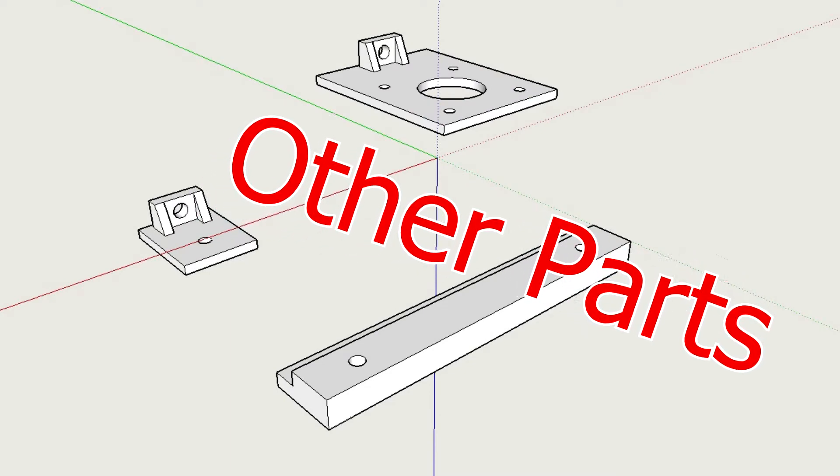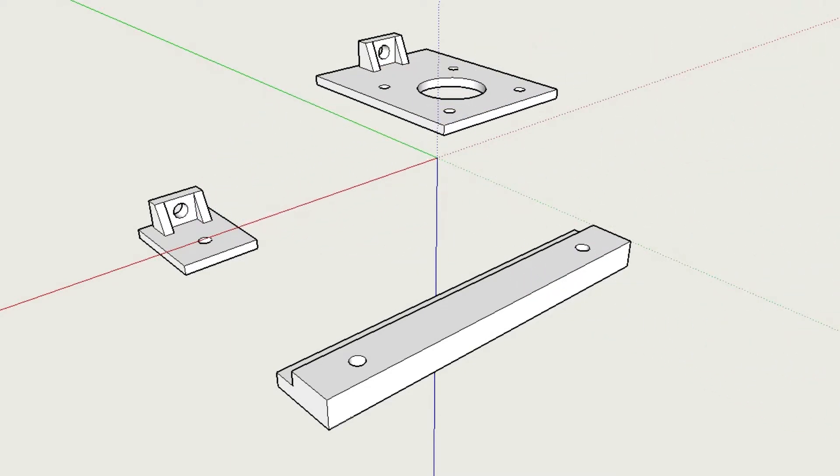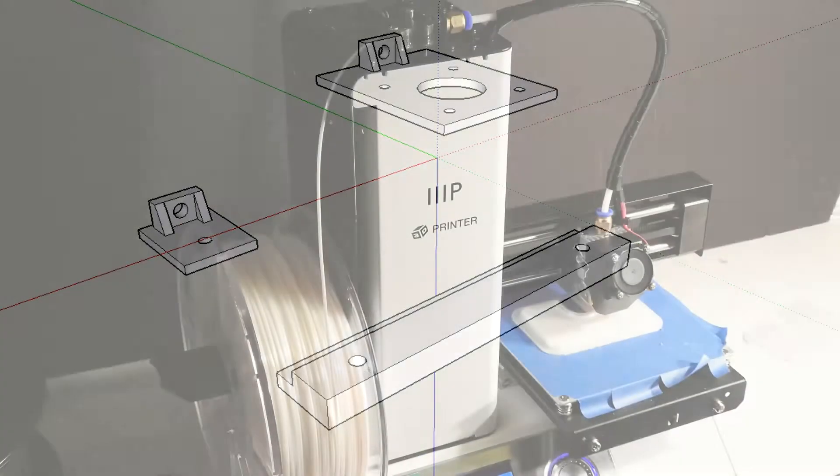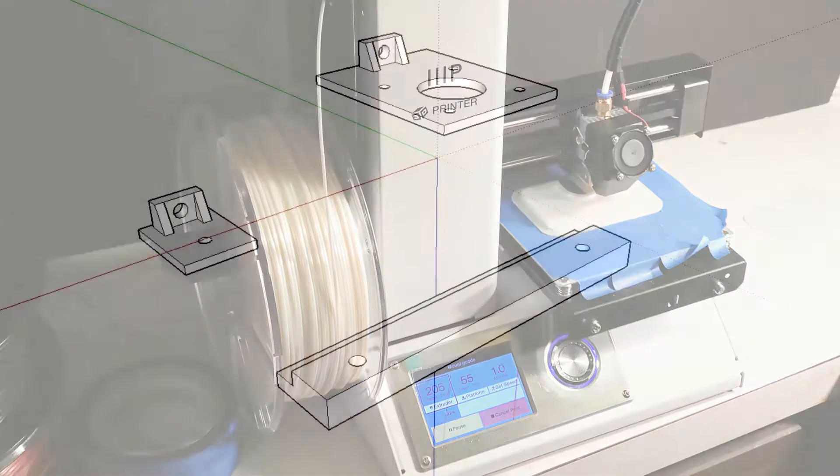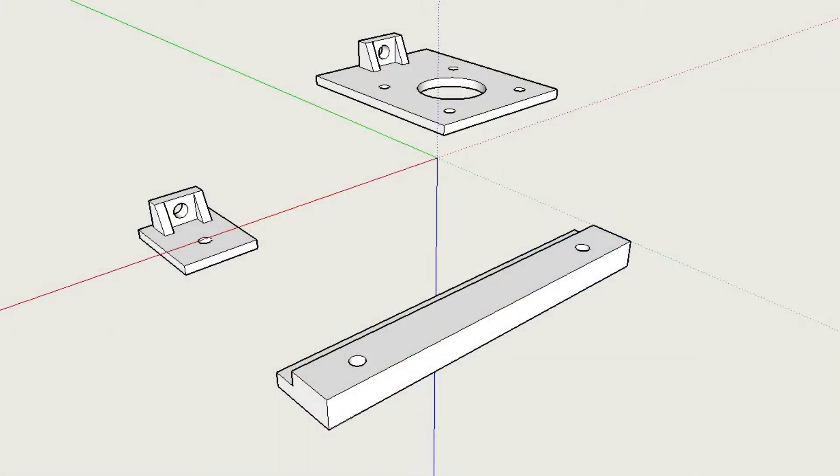A few other parts that you need to make are to mount the stepper motors and the shutter release mechanism. These can be made of wood or metal. However, since I recently obtained a 3D printer, I created them using PLA plastic and have included all designs and the G-code necessary for printing on my website.